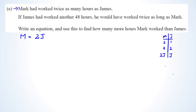For the second part: if James had worked another 48 hours, he would have worked twice as long as Mark. So whatever hours James worked plus 48 equals twice Mark's hours. That gives us j plus 48 equals 2m. Now we have a set of simultaneous equations that we need to solve.